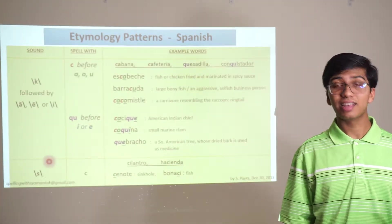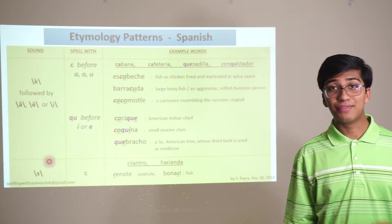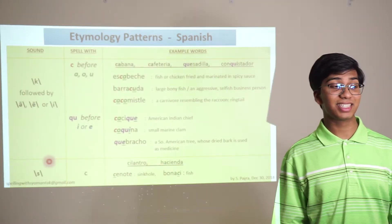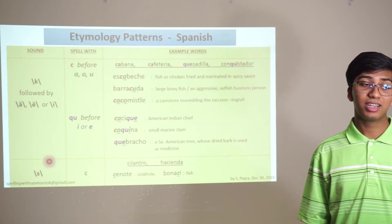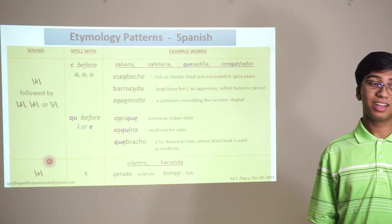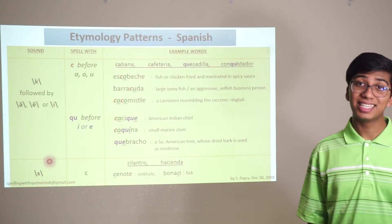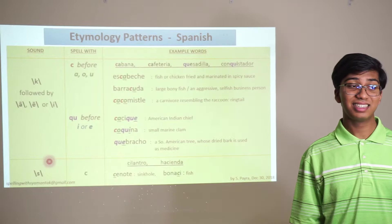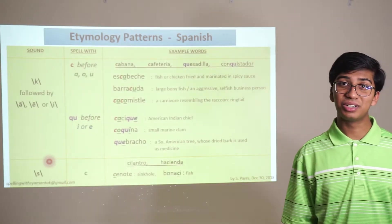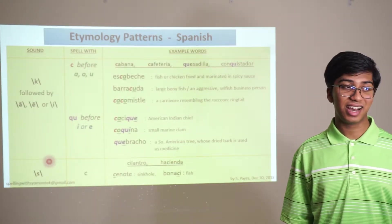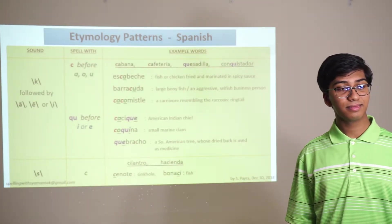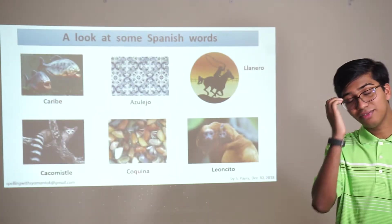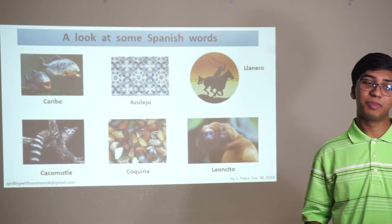With the S sound, it's slightly simpler. If you have an S sound before an E or I, it's going to be spelled with a C: cenote is C-E, bolasí is C-I, hacienda is C-I, cilantro is C-I. And here's a final look at some Spanish words.